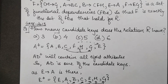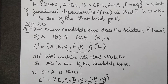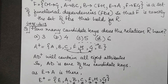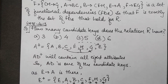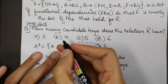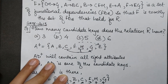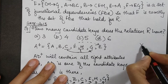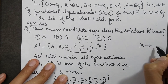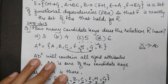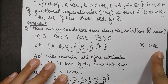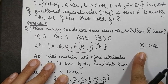We use a shortcut method to find other candidate keys. Knowing that AD is a candidate key, if there is some attribute X from which we can reach AD, then X also becomes a candidate key. This is because the closure of X will contain AD, and AD already contains all possible attributes, so X will also be a candidate key.